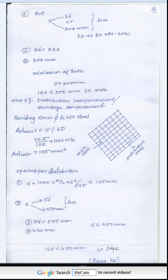Distribution reinforcement: Providing 6mm bars at 250mm spacing. Ast_min = 0.15% of B×D = 195 mm². Using the same spacing formula, spacing for distribution bars is calculated. Per IS 456-2000, maximum spacing for distribution bars is the lesser of 5d and 450mm. The calculated spacing is safe within this limit.